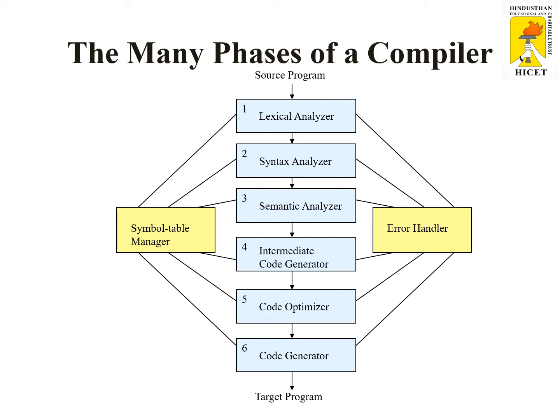The first step is lexical analyzer, second step is syntax analyzer, third step is semantic analyzer, fourth one is intermediate code generator, fifth one is code optimization, and sixth one is code generation. Along with that, we have two important supporting parts — those are symbol table manager and error handler.